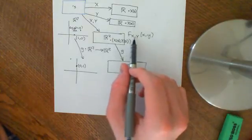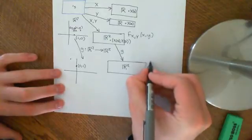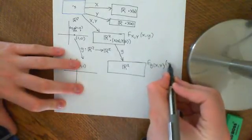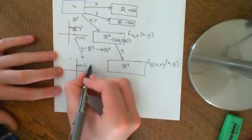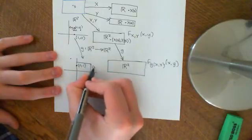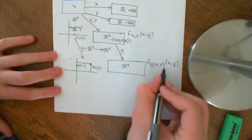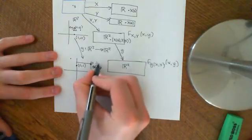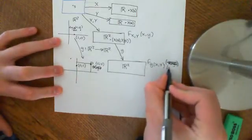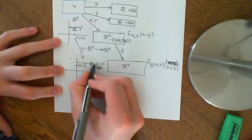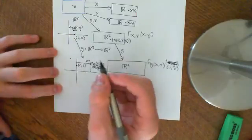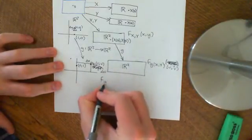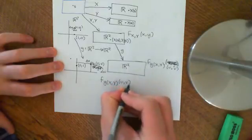What we want to do is transform this probability density function into f_{g(X,Y)}, which is a function of some variables u and v. So we want to know: if I take a point (u, v) in this new R² space, what's the probability density function there? If I make a little box there with side lengths δu and δv, we want to know what f_{g(X,Y)}(u, v) is.